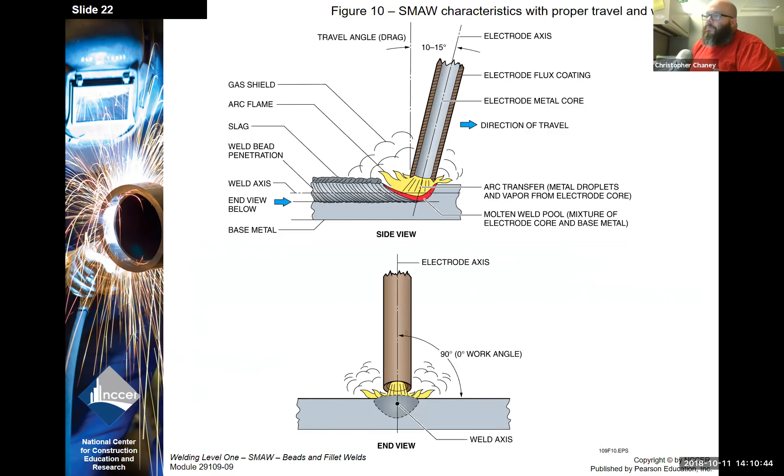Here we're looking at different angles and kind of looking at what happens when you're welding. We look at the top picture, the drag angle, the drag travel angle, and that's the angle the electrode leans in the direction you're moving, and then the work angle is the other angle. If you look at the front of the electrode along the axis of weld, what angle you're at there.